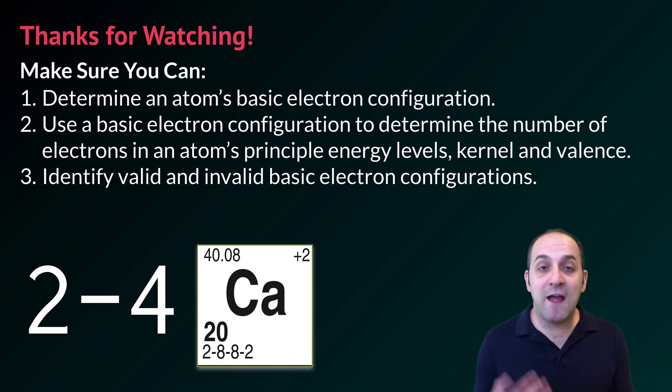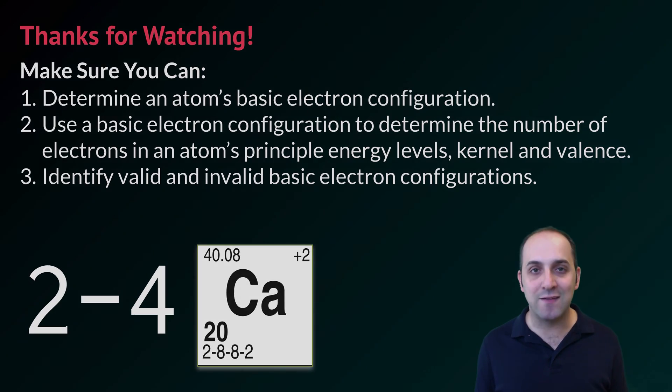And finally make sure that you can identify valid basic electron configurations. If I were to give you an electron configuration that was 2-9-4 for instance, can you tell me why that configuration is not a valid configuration that we could ever expect to see? If you can do each of those things you're doing great. If not, that's okay too. Take a moment and write down any questions that you have here at the end. You can always leave them in the comments below the video or get in touch with me through the information in the info field. Thanks again for watching. I really appreciate it. Have a great day.